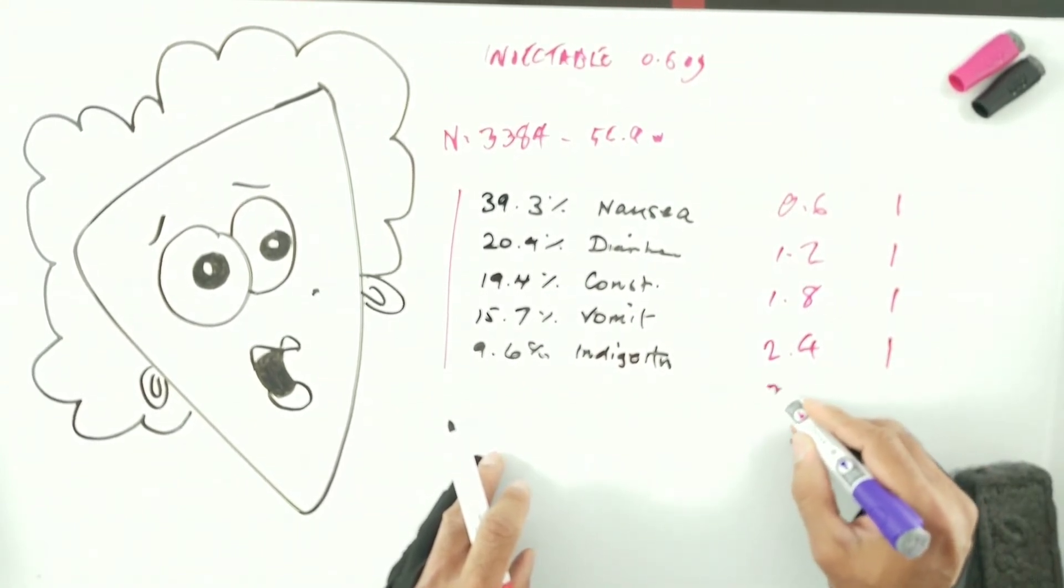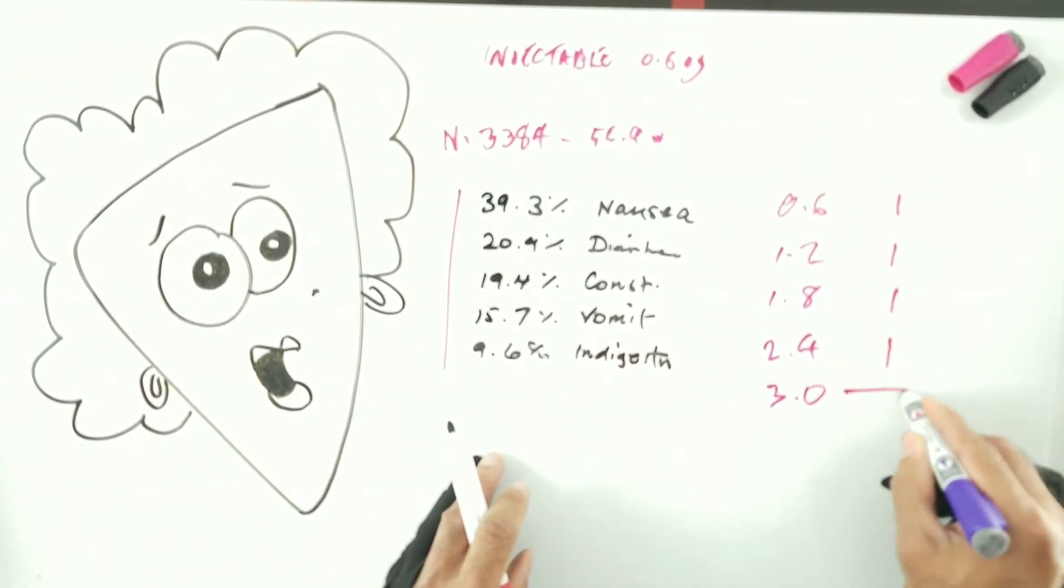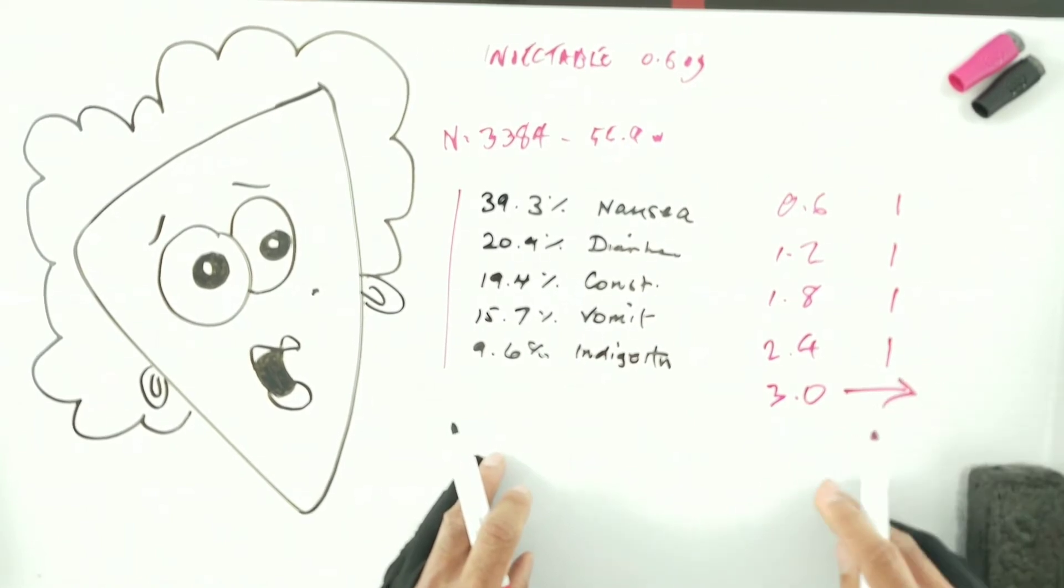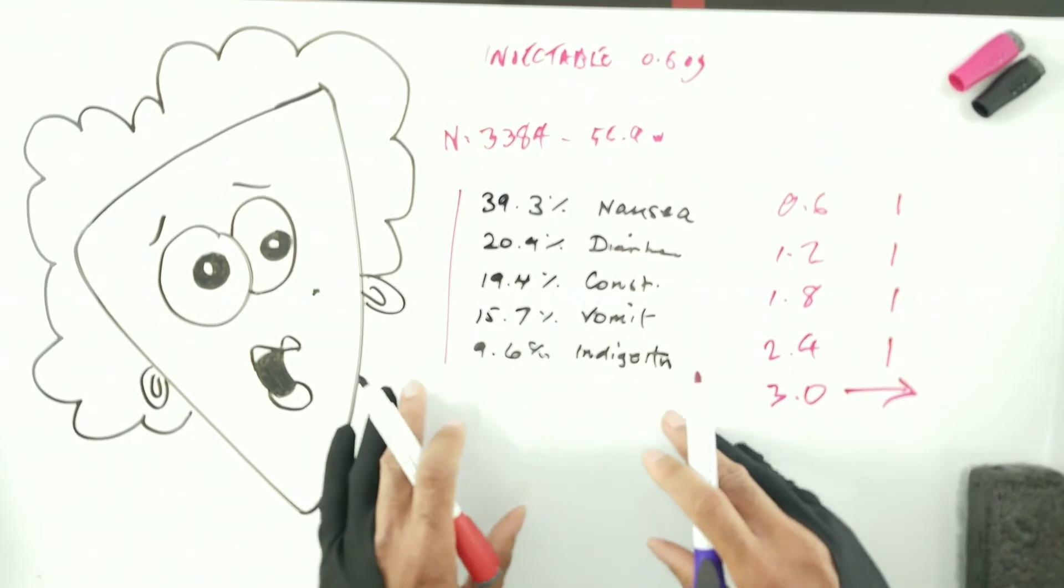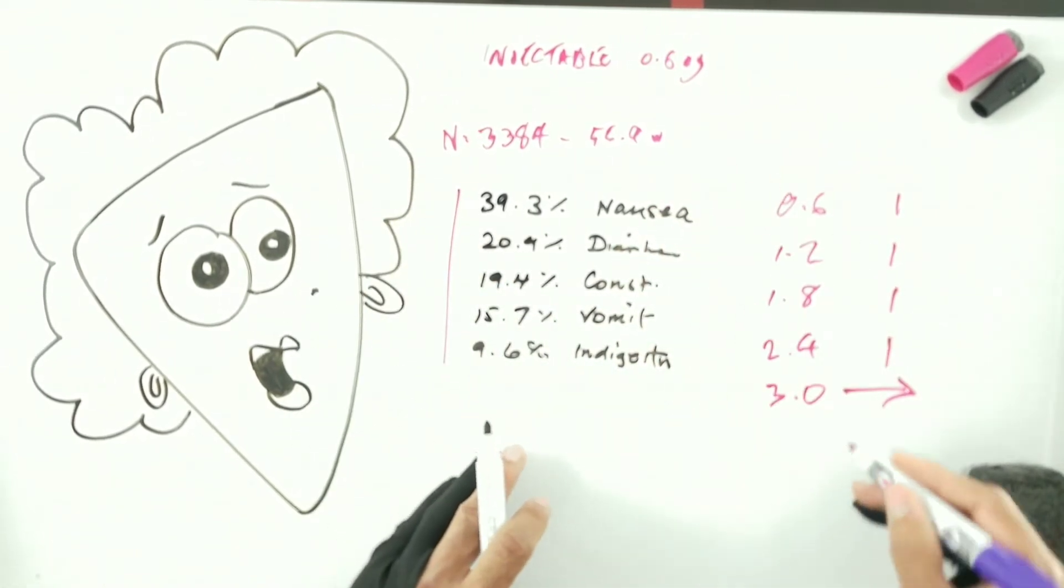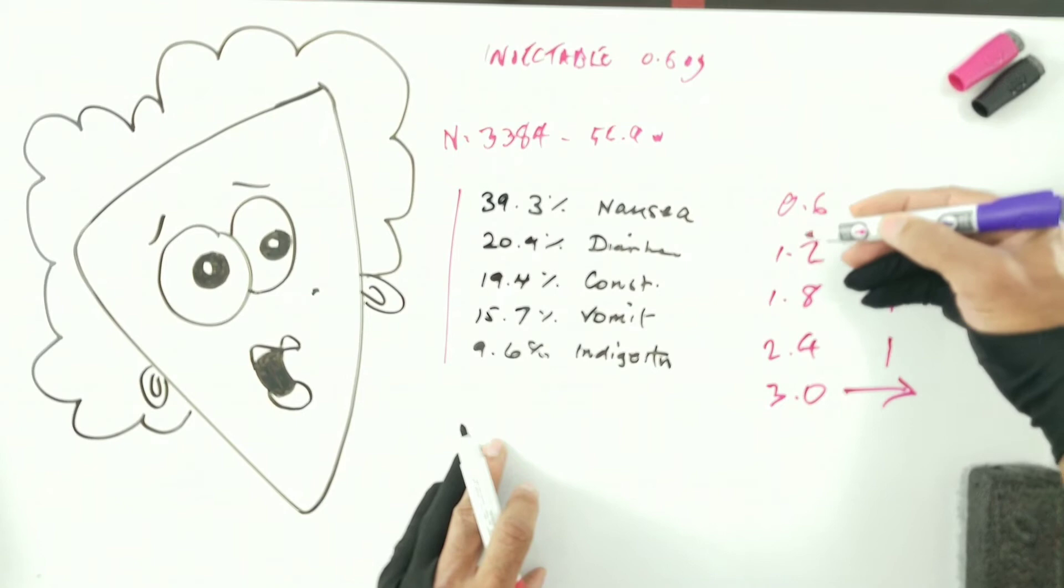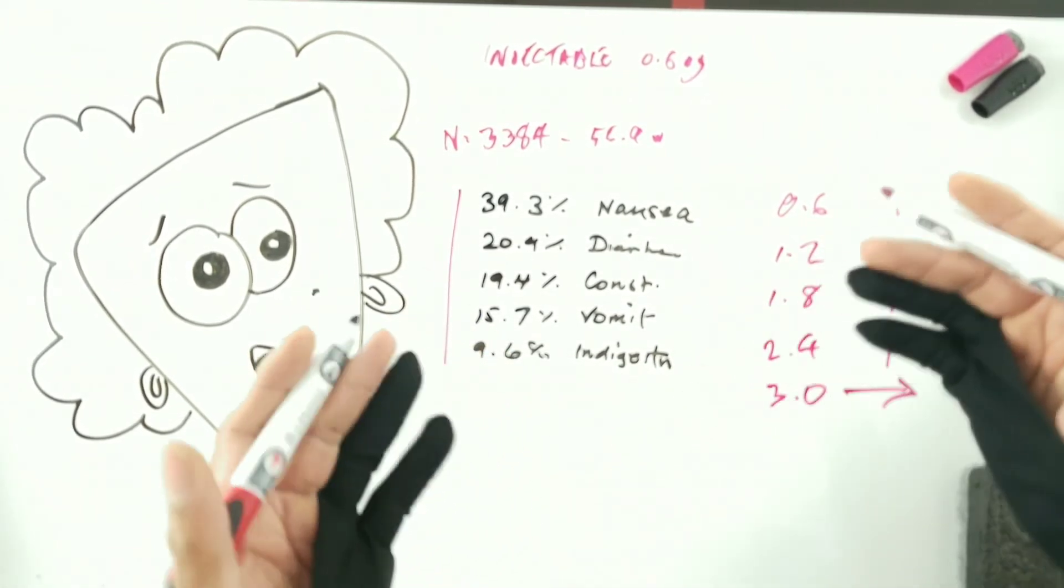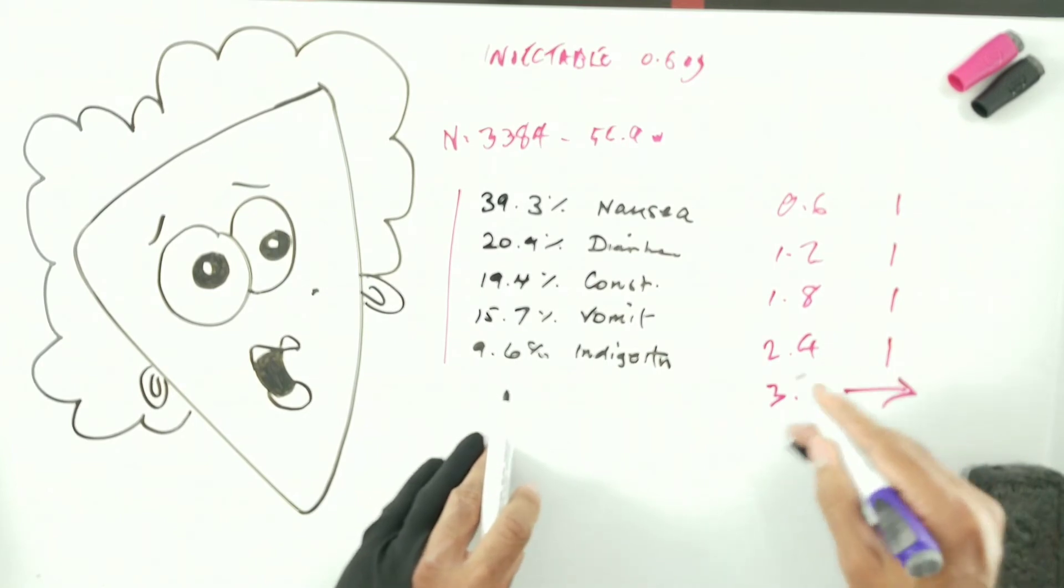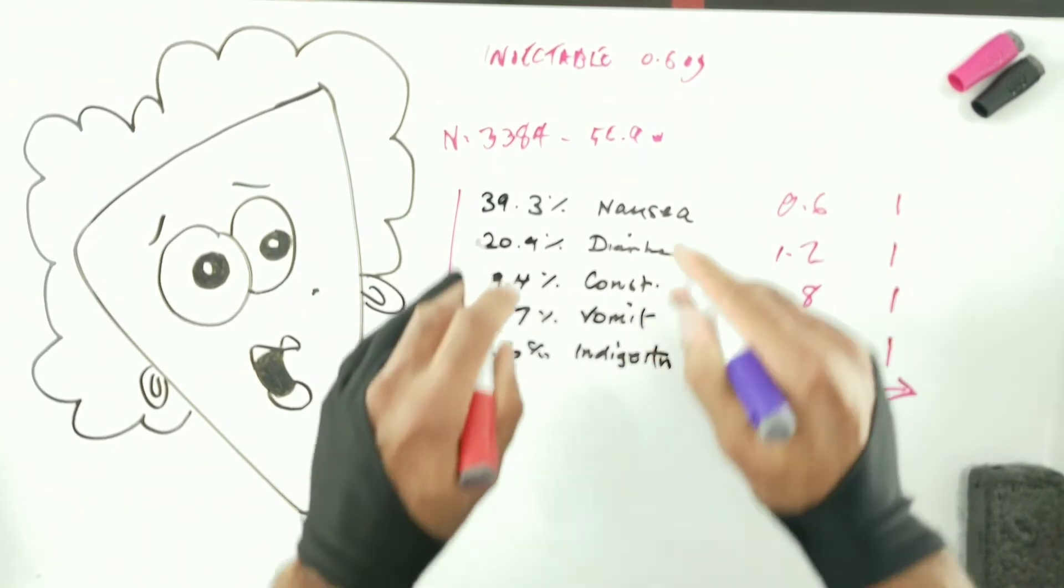One possibility is if these side effects are too egregious for you would be to try going backwards to the last strength that you could tolerate. Of course, your results aren't going to be as spectacular as if you could push the dose up to the maximum.